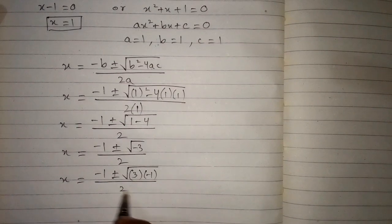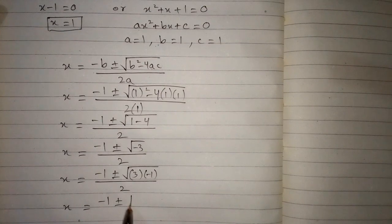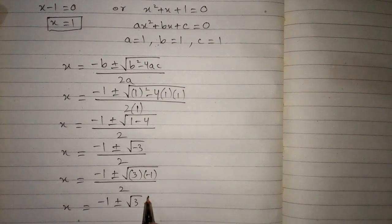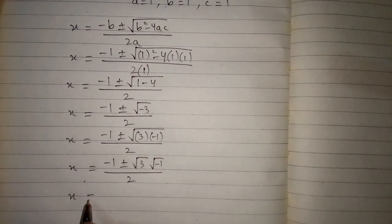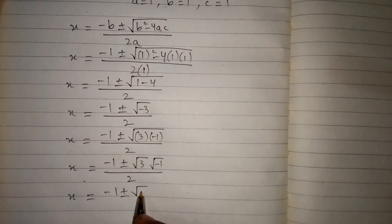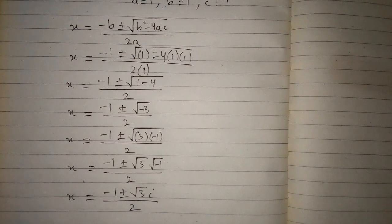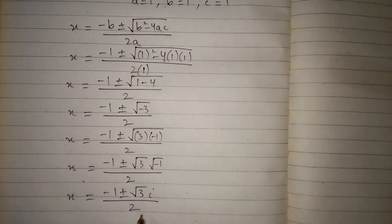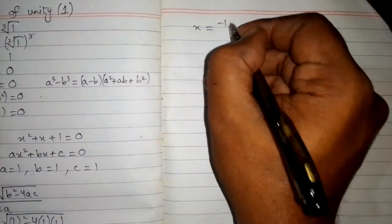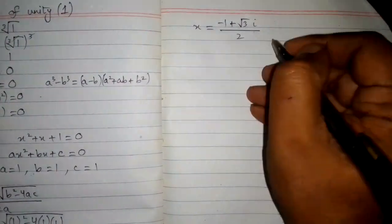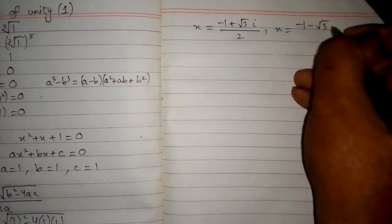This can be written as minus 1 plus or minus the square root of 3 times minus 1, divided by square root of minus 1, upon 2. Since the square root of minus 1 is iota, we have x equal to minus 1 plus or minus root 3 iota upon 2. The two values are x equals minus 1 plus root 3 iota upon 2, and x equals minus 1 minus root 3 iota upon 2.